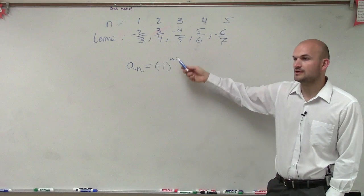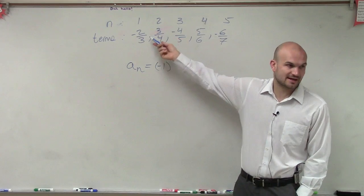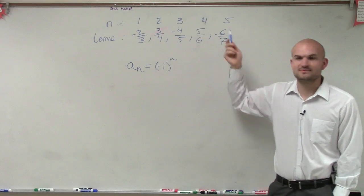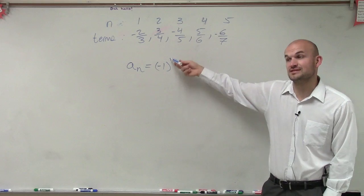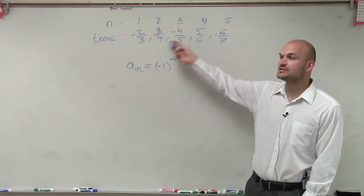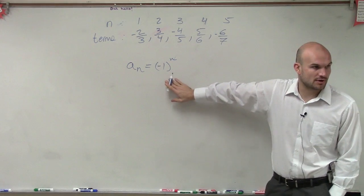If I put a 2 in there, negative 1 squared, it'll be positive 1, which will make the second term positive. And then it keeps on alternating depending on if this is odd or even. So whenever you see alternating signs, you're going to want to look for that.